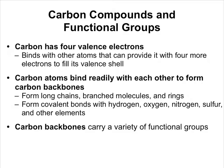Carbon has four valence electrons — those are the outer shell electrons — meaning it can combine with four different things. Carbon binds with other carbon atoms to form these carbon backbones or carbon skeletons, and you can then have functional groups hanging off of those carbon backbones. There are some common motifs that you might see in carbon backbones.